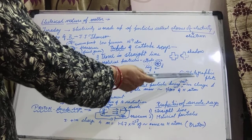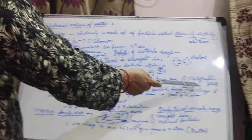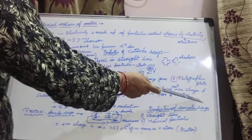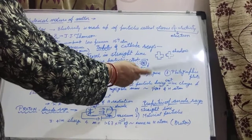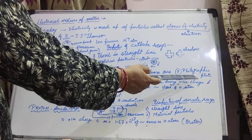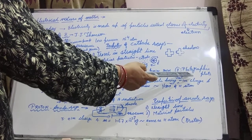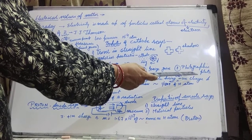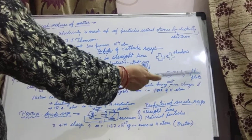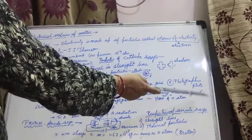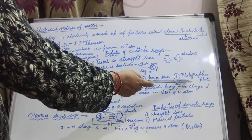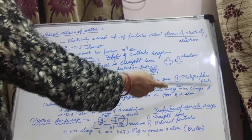The next property is that cathode rays affect the photographic plate. What is the meaning of this? Suppose if we are coating any surface with zinc sulfide and cathode rays are striking to that plate, they produce their impression on it. So it is called they are affecting the photographic plate — they are associated with light and produce some effect. So these are the properties of cathode rays.